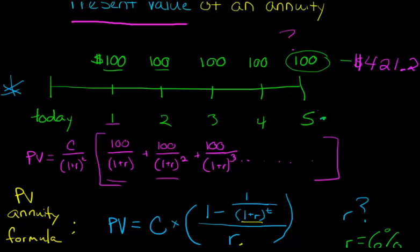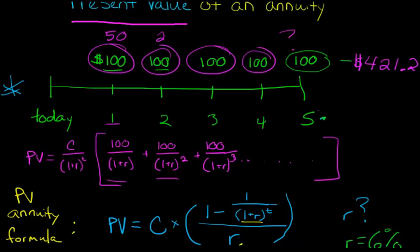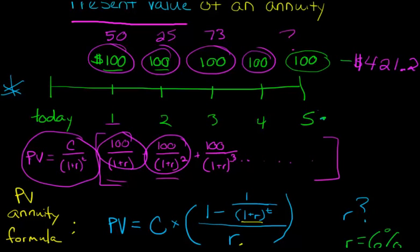To use that formula that we just worked through for the annuity, these payments need to be the same amount for every year. So if this was $50 here, and then this was $25, and then this was $73 and so forth, then we'd have to go ahead and do it longhand and treat each one as an independent single cash flow, calculate its value, and then sum them up all together.